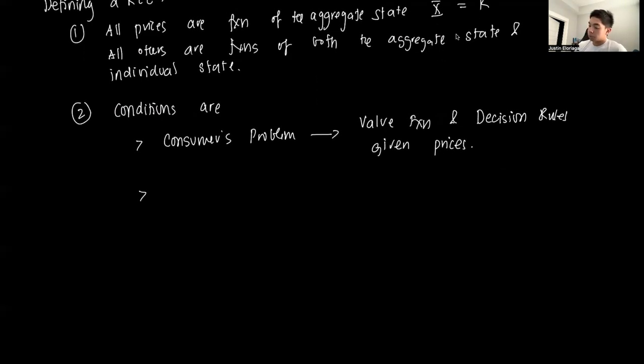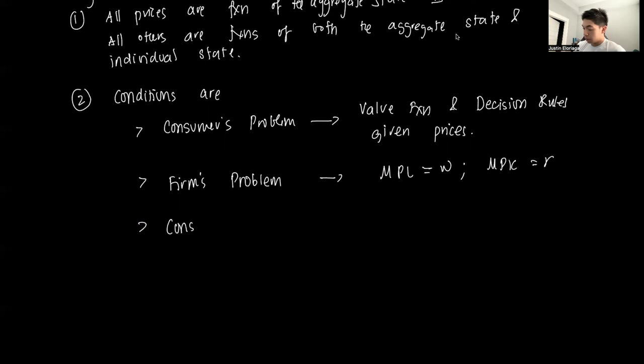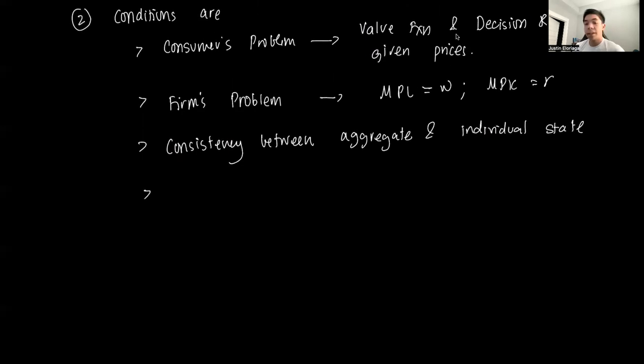The next one is the firm's problem. The firm's problem is about solving the first order conditions of profit maximization. So the marginal product of labor equals the wage rate and the marginal product of capital equals the rental rate. The third is that there should be consistency between aggregate and individual state. And lastly, any other conditions.